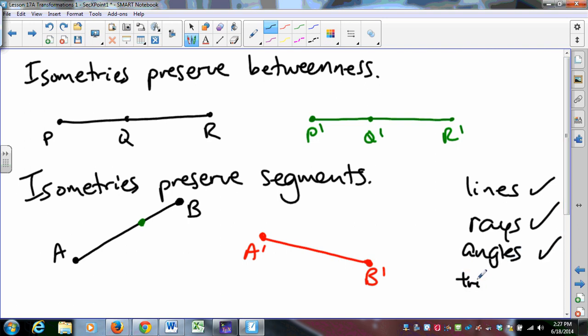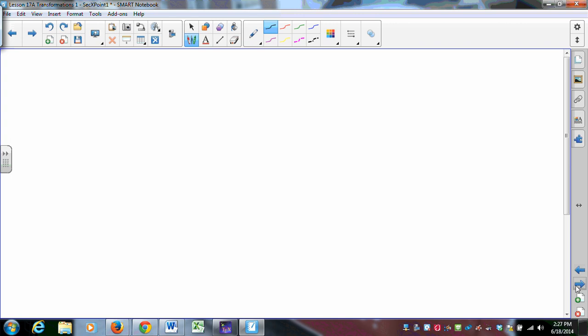Isometries preserve angles, and in fact, triangles. If you have a triangle in the plane, and you perform some isometry on the plane, that triangle remains a triangle.